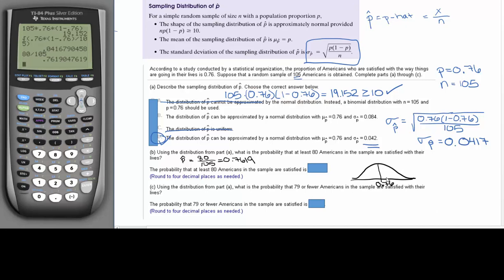So 0.7619 is just a little bit to the right of 0.76, and it's saying the probability that at least, so at least means this many or more.